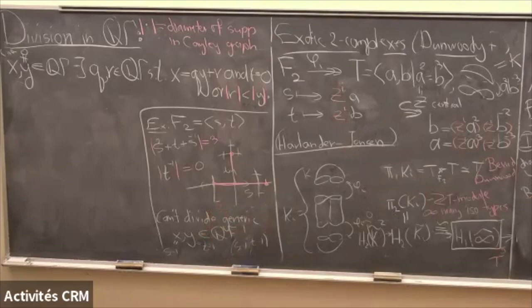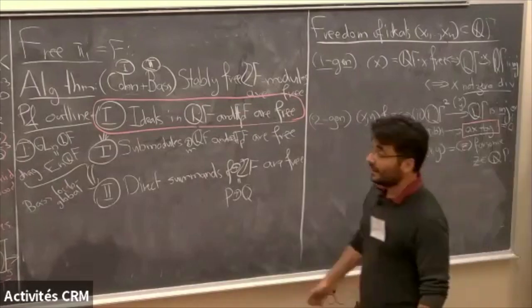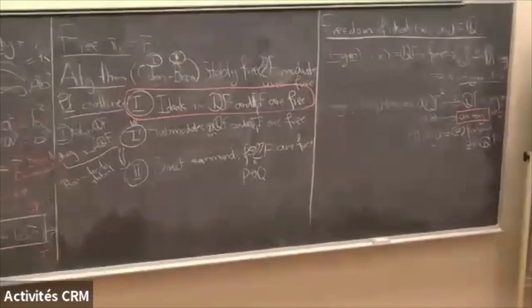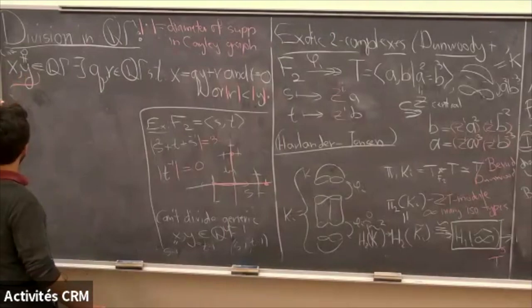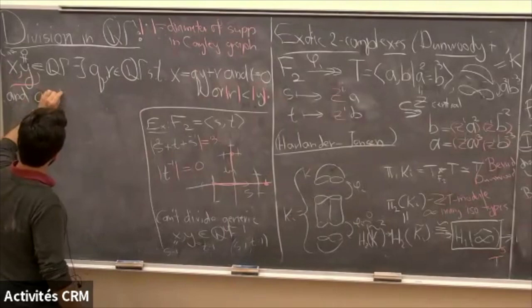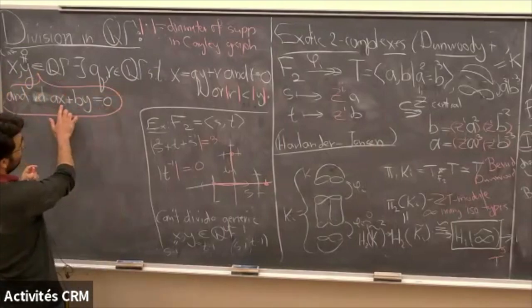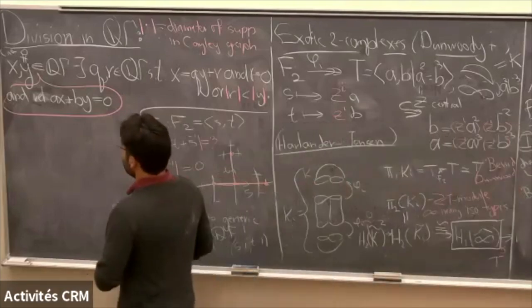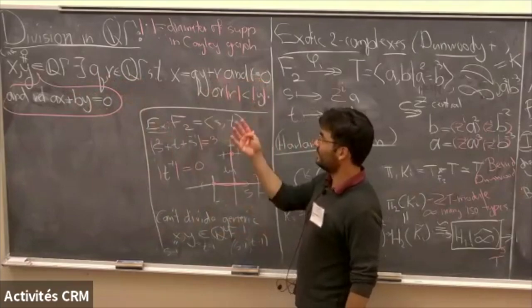The good news is that we're looking at pairs of elements x and y where the first thing — injectivity — failed. That means this map wasn't injective, so there's an equation Ax + By = 0 for some nonzero A and B in Z[gamma]. And that is what you're supposed to use. One of Cohn's big observations is that if you have x and y with a linear relation Ax + By = 0 — a relation linear in the group ring where A, B are group ring elements — then you can divide in the free group.